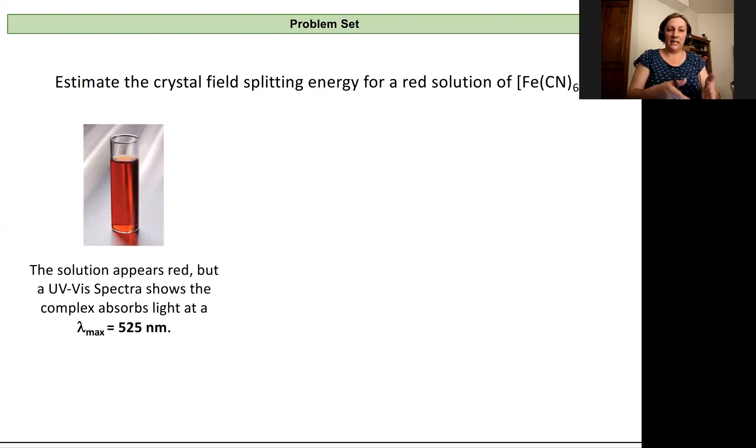So we have our lambda, our wavelength for our light, and we're going to use this equation that energy of a photon, which is really going to be equal to that crystal field splitting energy, is equal to Planck's constant times the speed of light divided by the wavelength.